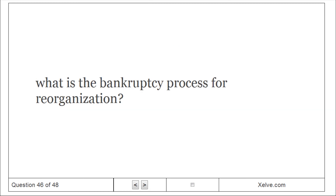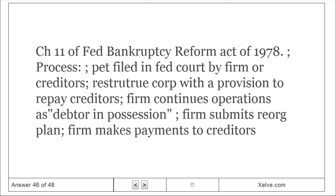What is the bankruptcy process for reorganization? Chapter 11 of the Federal Bankruptcy Reform Act of 1978: a petition is filed in federal court by the firm or creditors. The corporation is restructured with a provision to repay creditors, and the firm continues operations as a debtor in possession. The firm submits a reorganization plan and makes payments to creditors.